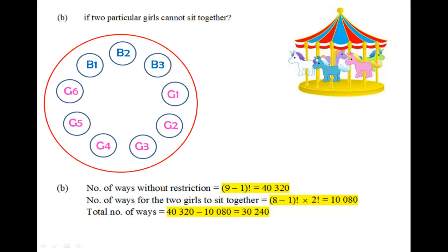So to solve this problem, we can actually use the complementary method, which will ease our calculations. We can use the total number of ways without any restrictions, minus away the total number of ways for the two girls to sit next to each other. This will give us the required solution.